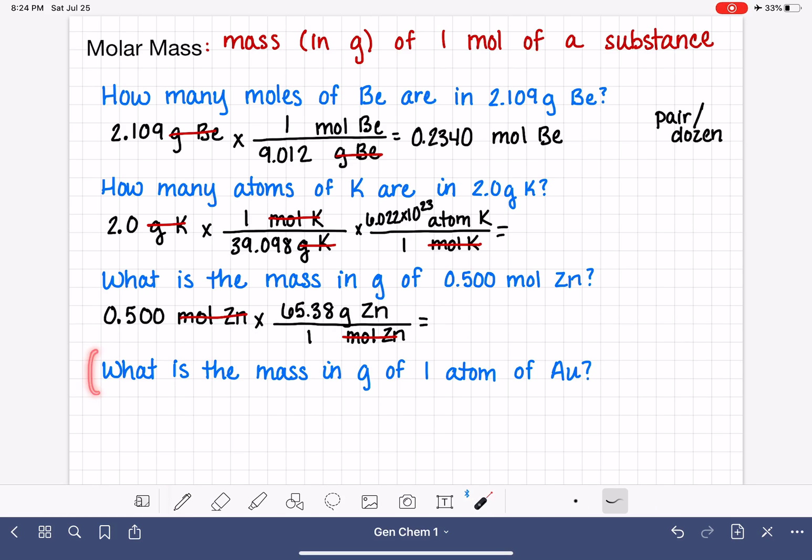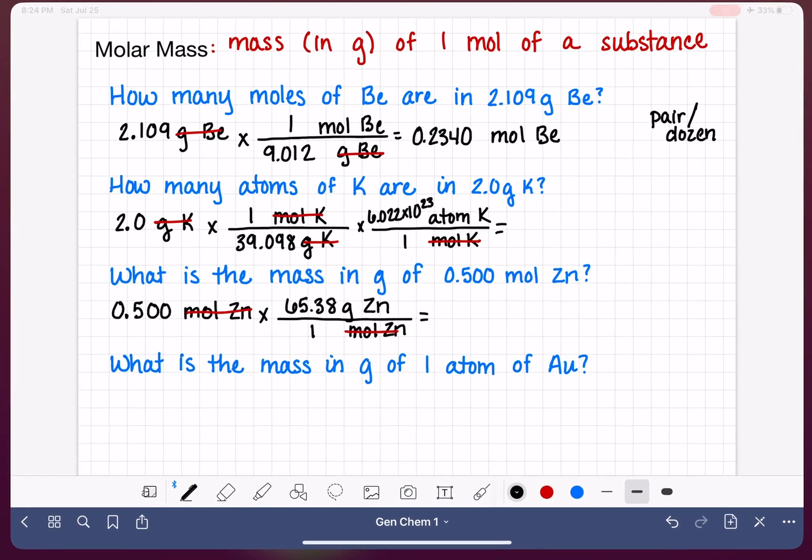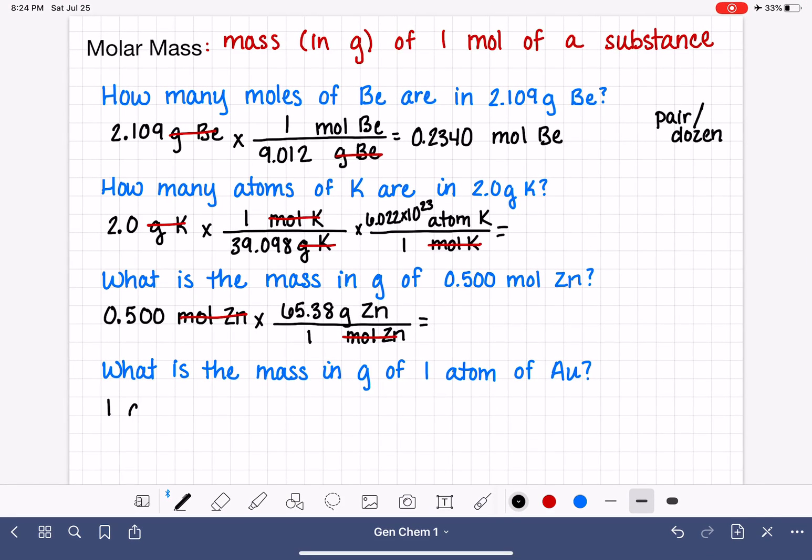And let's get our last one set up. What is the mass of one atom of gold? AU is gold. So we'll start by writing what we know. We know that we have one atom of AU. Notice for all these problems, I'm not just writing that we have an atom or a mole or a gram. I'm also writing what the substance is. That helps me when I go to the periodic table to make sure that I'm looking up the right element. I want a conversion factor here that's going to put atoms of gold down on the bottom.